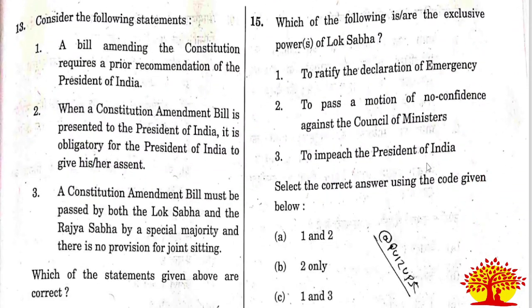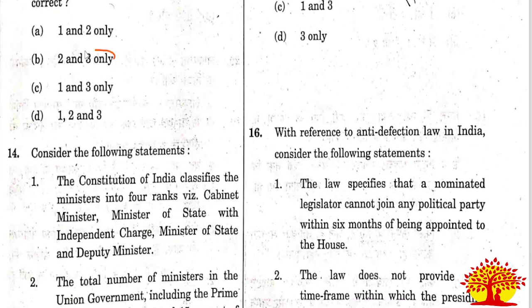Thirteenth question: Statement 1 - a bill amending the constitution requires prior recommendation of the president. Statement 2 - when a constitution amendment bill is presented to the president, it is obligatory for the president to give assent. Statement 3 - a constitutional amendment bill must be passed by both houses of parliament with special majority. Statement 1 is wrong because a constitution amendment bill does not require prior recommendation of the president; it can be introduced by a minister or private member. Statements 2 and 3 are correct. Option B is the right answer.